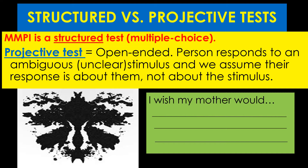All the tests we've learned about so far are structured tests — the Myers-Briggs, the 16PF, the Big Five, the MMPI. There's a different category called projective tests. The theory here is that people are allowed to give any answer they want to some ambiguous, unclear stimulus. We give them an inkblot and say, tell us about this. Say anything you want. These are open-ended.